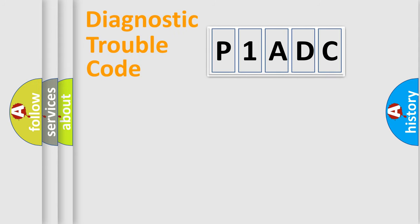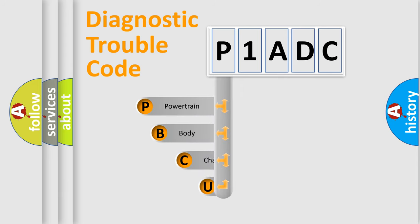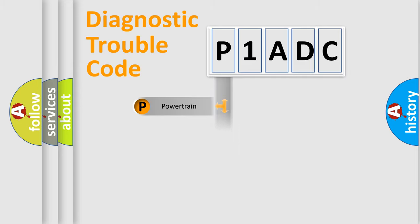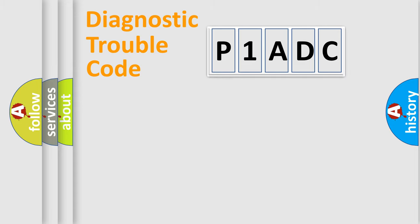First, let's look at the history of diagnostic fault code composition according to the OBD2 protocol, which is unified for all automakers since 2000. We divide the electric system of an automobile into four basic units: Powertrain, Body, Chassis, and Network. This distribution is defined in the first character of the code.